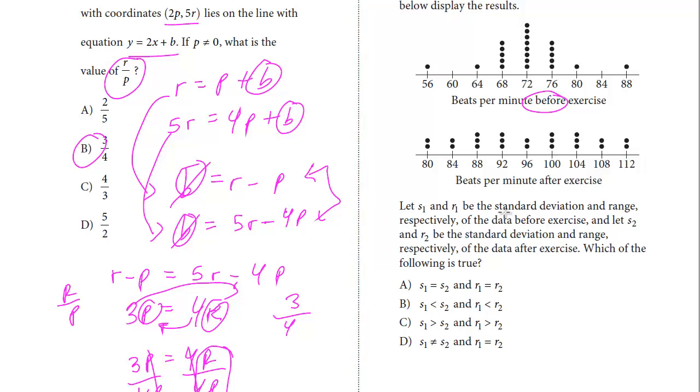And let's take a look at the question. Let S1 and R1 be the standard deviation and range, respectively, of the data before the exercise. And S2 and R2 be the standard deviation and range, respectively, of the data after. Which of the following is true. So S1 is the standard deviation, R1 is the range before, and then we have S2 and R2 after.